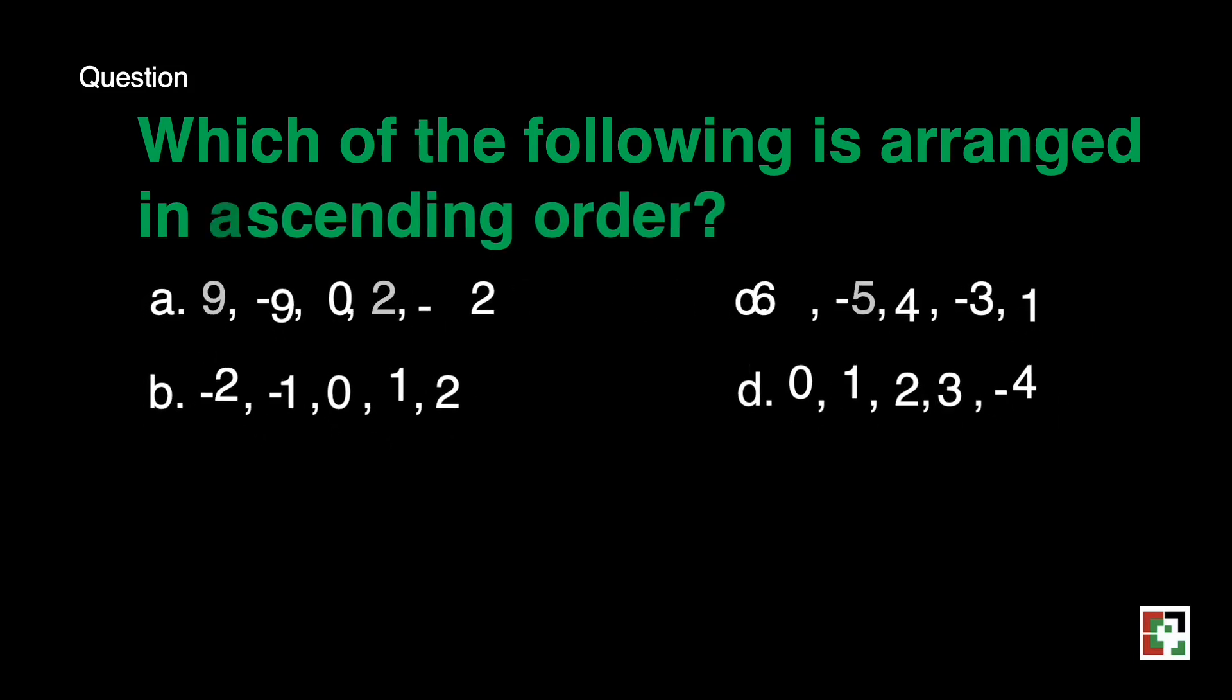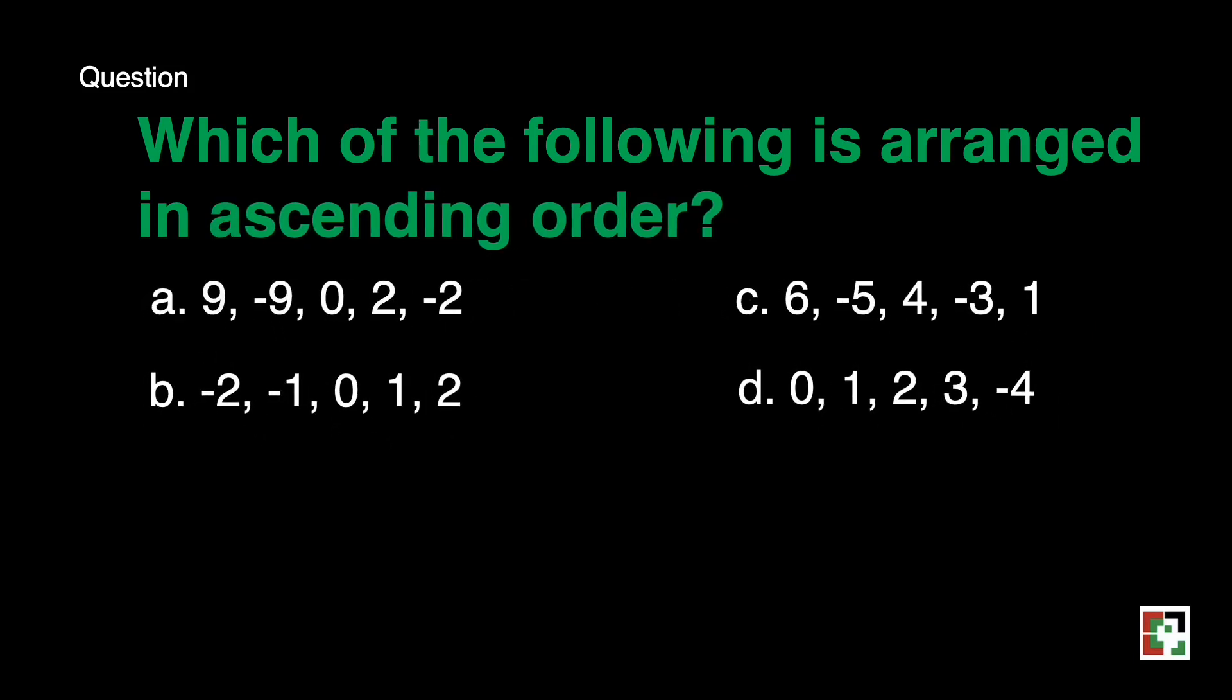Next question. Which of the following is arranged in ascending order? Is it A? Is it B? Is it C? Or is it D? When we say ascending order, it is from the least to the greatest value. Our answer is letter B. That's from negative 2, negative 1, 0, 1, and 2.